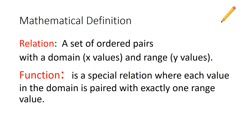Now we get to some writing, so open your foldable and find the mathematical definitions. We have two words: relation and function. A relation is a set of ordered pairs with a domain — the x values — and a range — the y values. The domain is all the x values on your graph and the range is all the y values. Make sure you get that definition down.